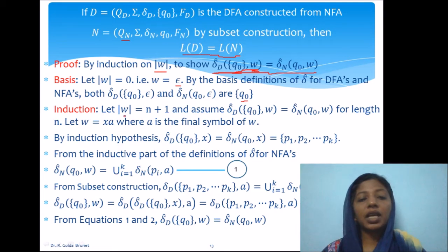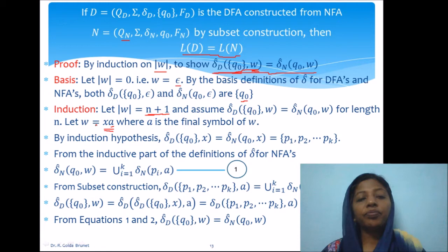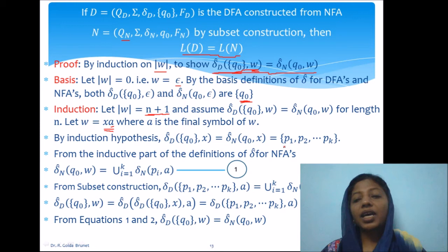For the induction step, consider a string W of length N+1. We assume the statement is true for strings of length N. We rewrite W as XA, where A is the last symbol and X is a string of length N. By the induction hypothesis, starting from Q0 and accepting X in either the DFA or NFA, we end up with the same set of states, say {P1, P2, ..., Pk}.